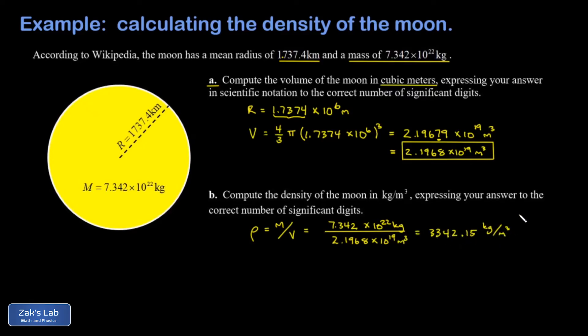When I look at the numbers that went into this calculation, the mass was rounded to four significant digits originally, and our volume was kept to five significant digits. That means we're going to round our final answer to four significant digits.